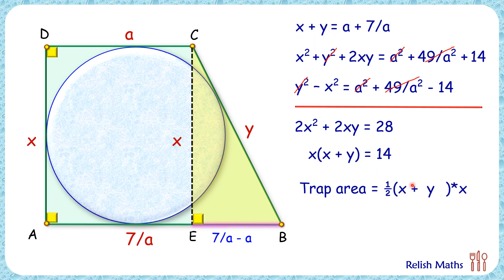Now here is the magic: x + y times x, we have calculated earlier as 14, so let's replace it with 14. Solving it, we'll get area of trapezium as 7 cm², and that's our answer. I hope you enjoyed the solution. I will see you in the next video. Till then, tata, bye bye!